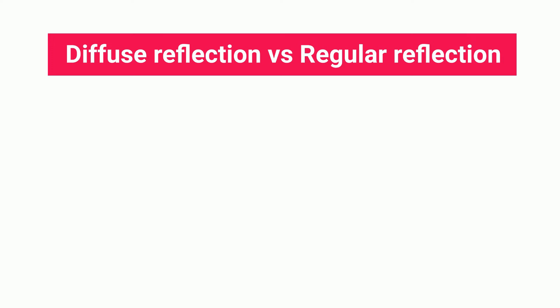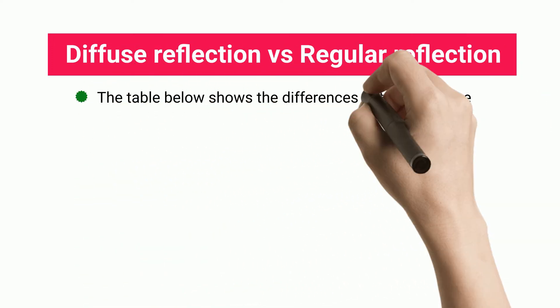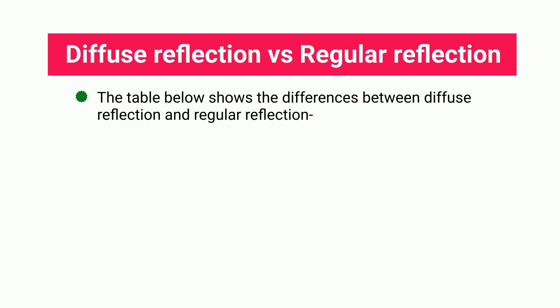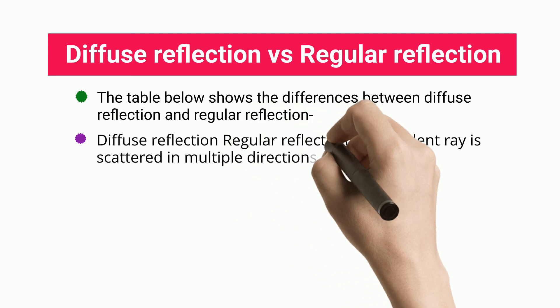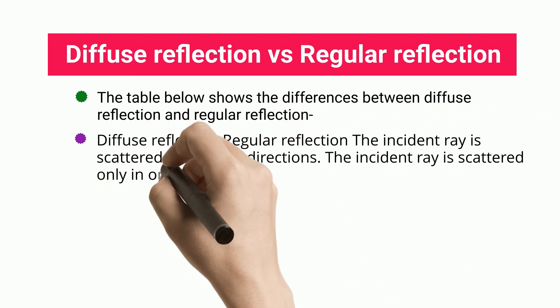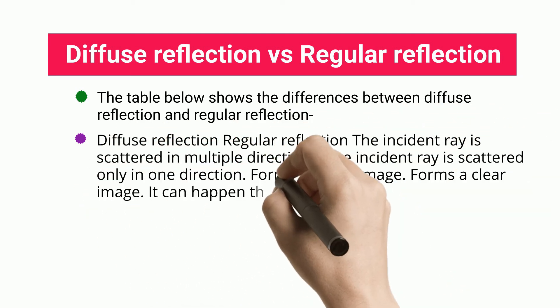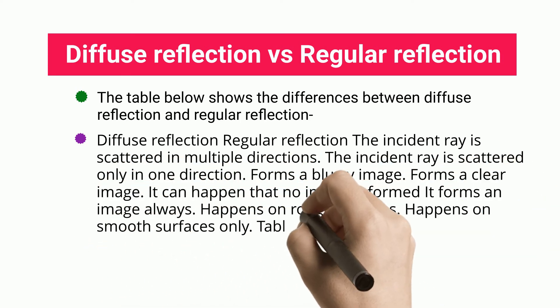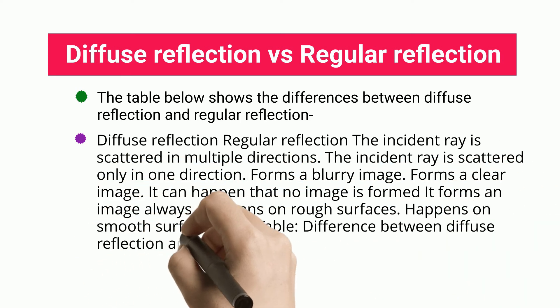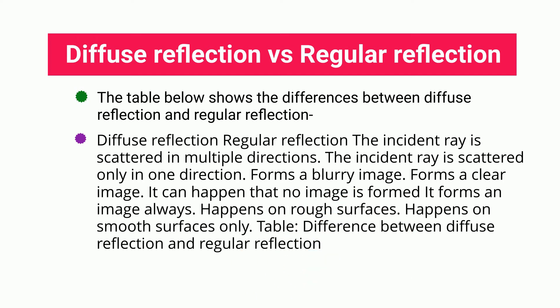Diffuse reflection versus regular reflection: in diffuse reflection, the incident ray is scattered in multiple directions, whereas in regular reflection, the incident ray is scattered only in one direction. Diffuse reflection forms a blurry image, while regular reflection forms a clear image. It can happen that no image is formed in diffuse reflection, while regular reflection forms an image always. Diffuse reflection happens on rough surfaces; regular reflection happens on smooth surfaces only.